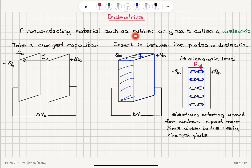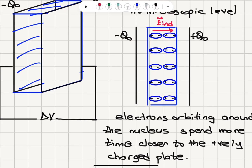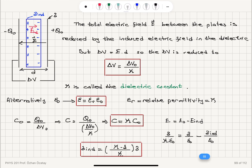In summary: inserting a non-conducting dielectric material such as rubber or glass between the plates of a capacitor — charged to +Q₀ and −Q₀ — causes polarization inside the material. This gives a net positive surface charge density on one side and negative surface charge density on the other, resulting in an induced electric field that opposes the original electric field. The total electric field E is reduced, and this reduction means the potential difference is reduced to ΔV₀/κ. The reduction factor is called the dielectric constant.